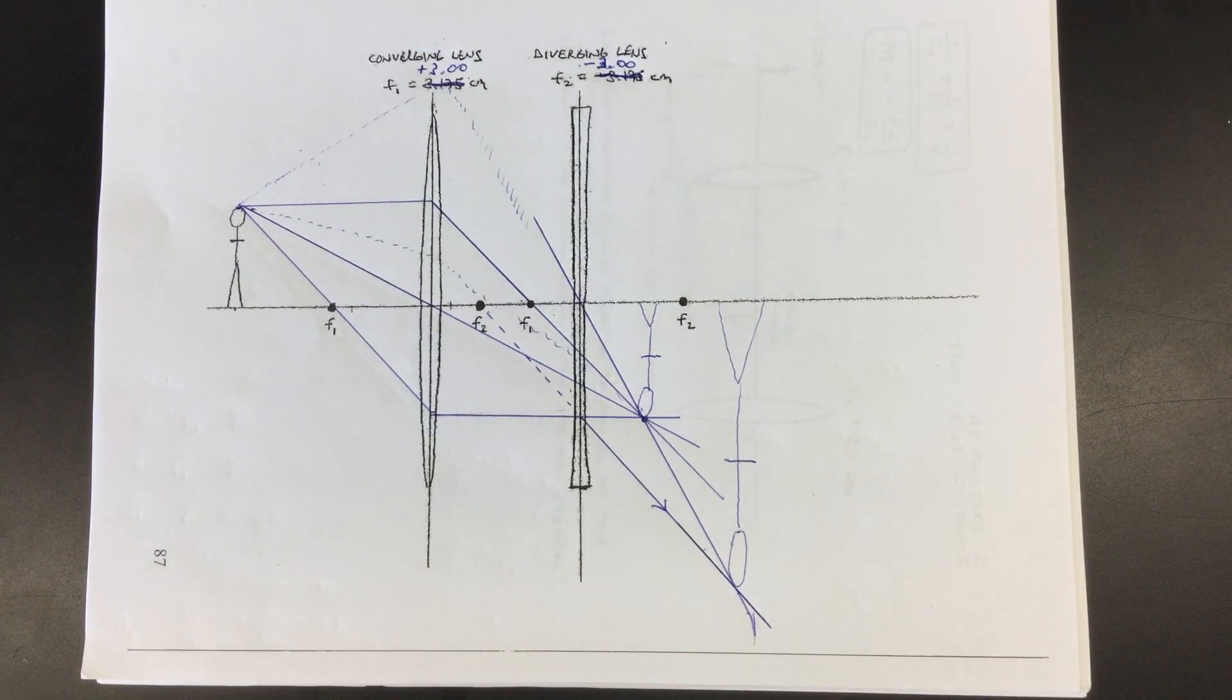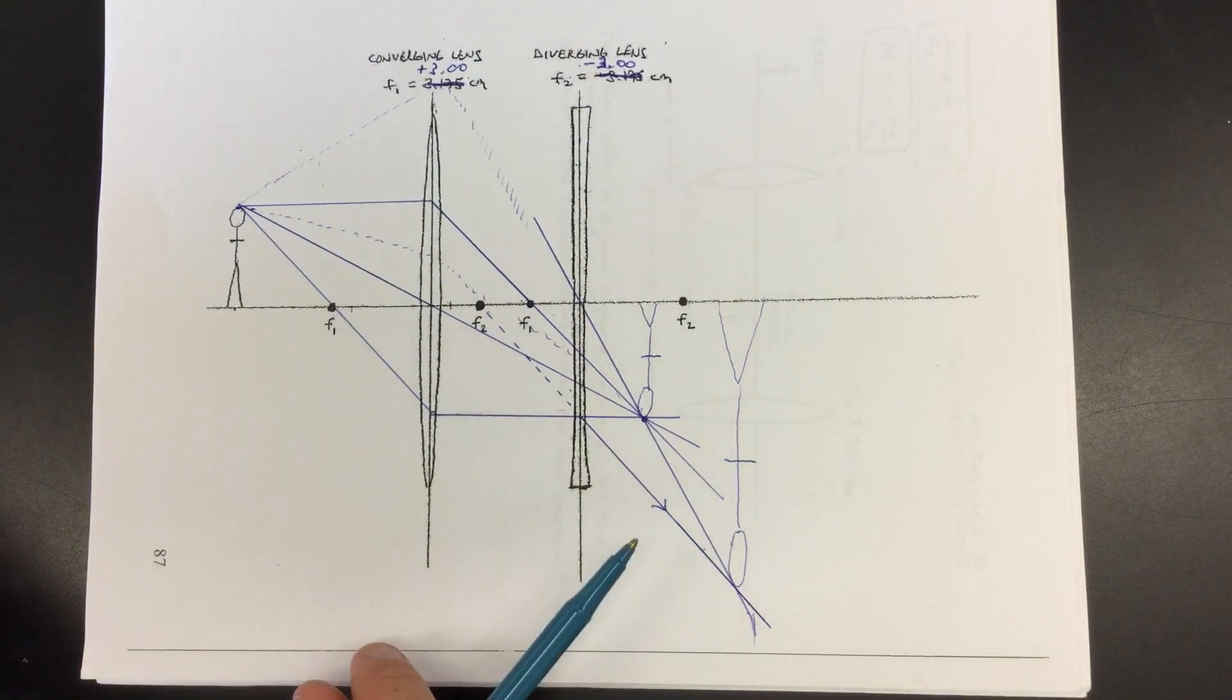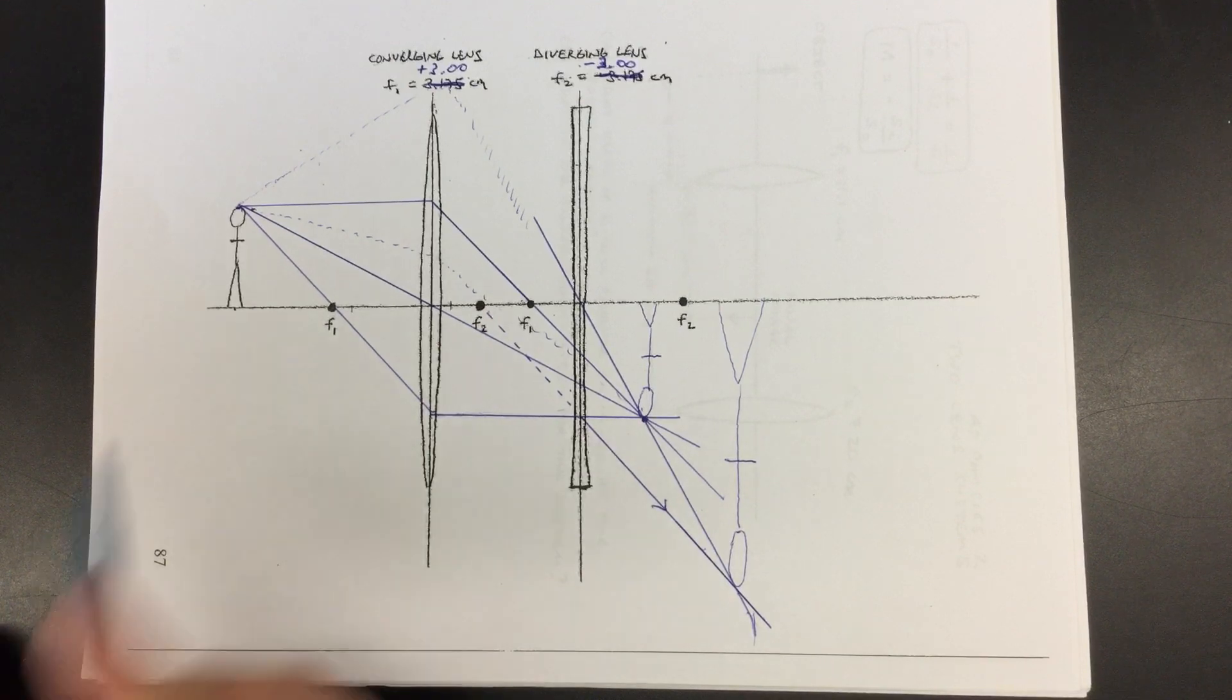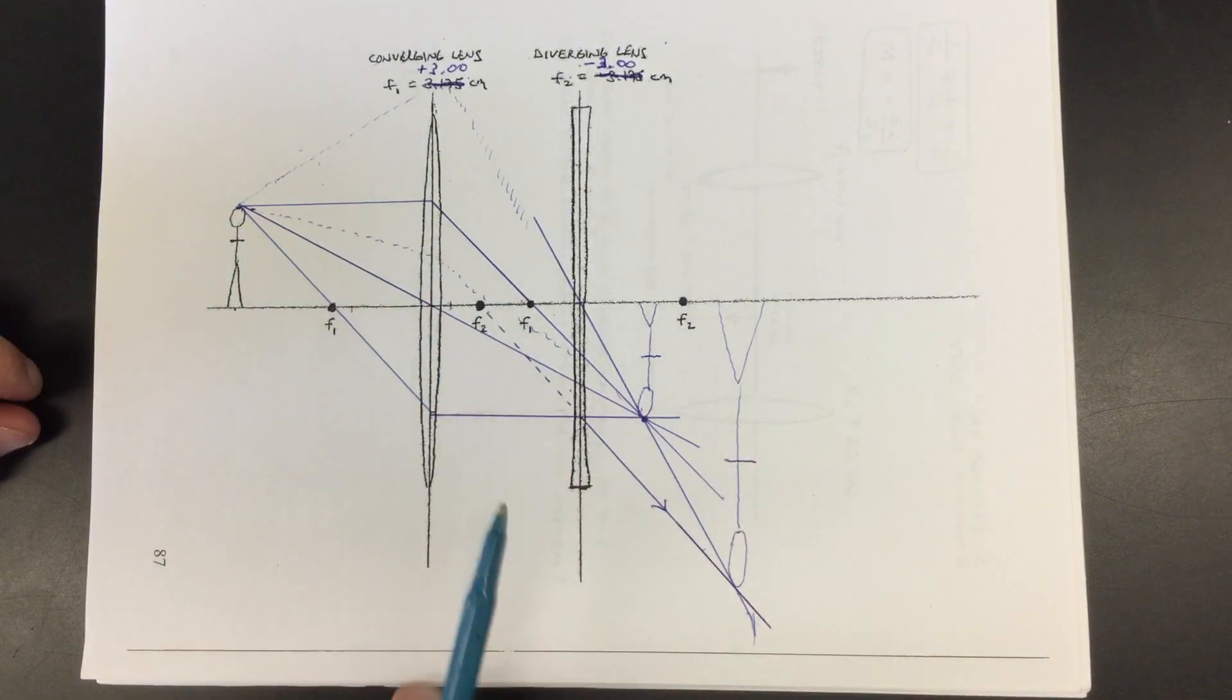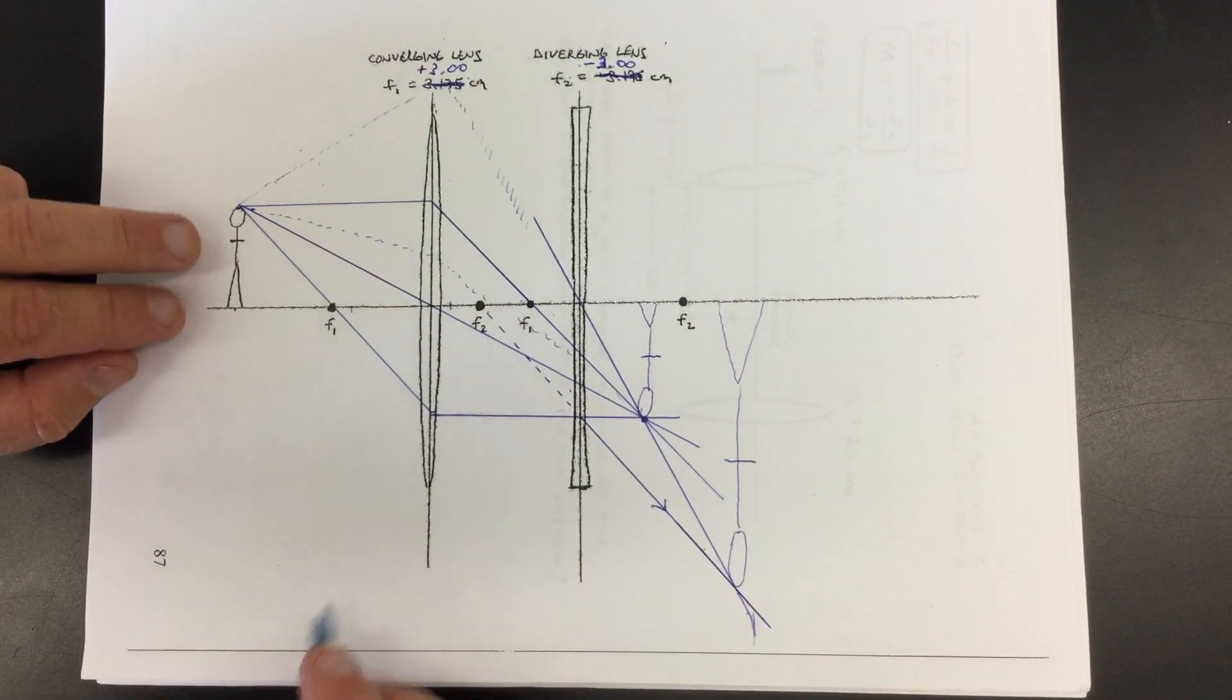All right, let's use the thin lens equations to see how good my drawing is. We can calculate where the image should have shown up and how big it's supposed to be to see how good my drawing with ballpoint pen was here. So let's go for it.